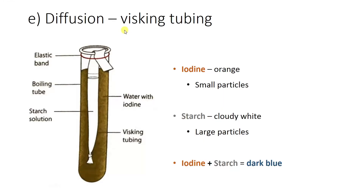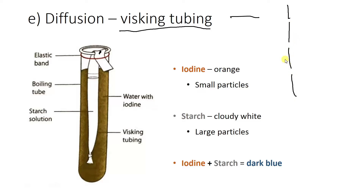Visking tubing is a way of modelling how this works. The visking tubing is this kind of wiggly, slippery material that you can put solutions in and then see what happens with diffusion. This visking tubing acts like a cell membrane — it has a selectively permeable membrane. There are all these little gaps for things to move through, but the gaps are not big enough for something bigger to go through. So that could not come in, but this one could.